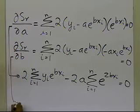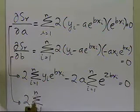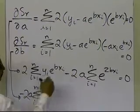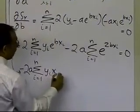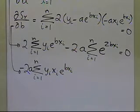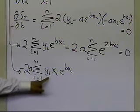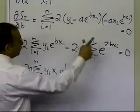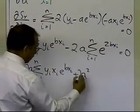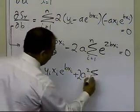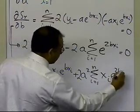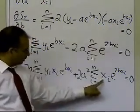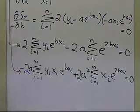For the second equation I get: minus 2a·summation i=1 to n of y_i·x_i·e^(b·x_i), plus 2a²·summation i=1 to n of x_i·e^(2b·x_i), equal to 0. The e^(2b·x_i) again comes from combining e^(b·x_i)·e^(b·x_i) — bases are the same, powers are added.